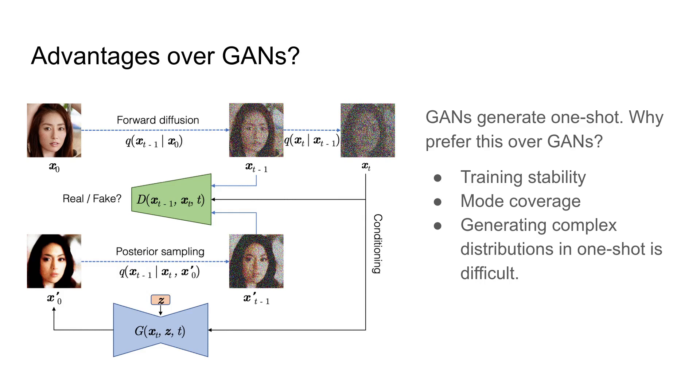Well, the authors argue that generating complex distributions in one shot is difficult. This might be the reason why we faced issues with training stability and mode coverage with regular GANs. Diffusion breaks down the generation process into relatively simpler steps. Furthermore, the discriminator is less likely to overfit in this configuration because it operates on noisy images.